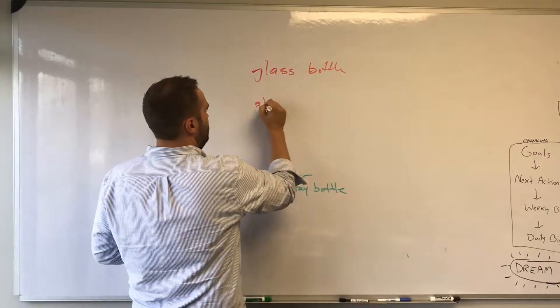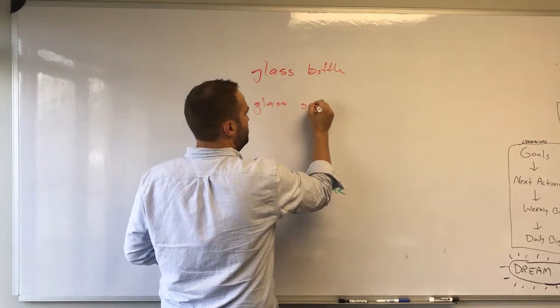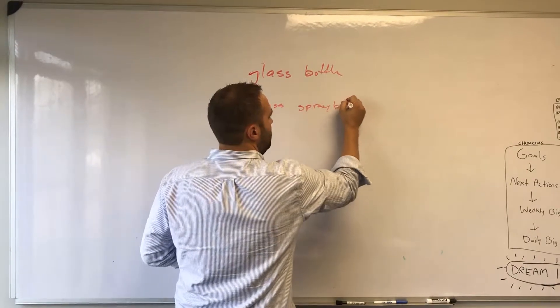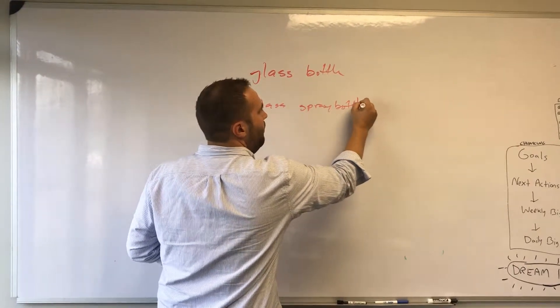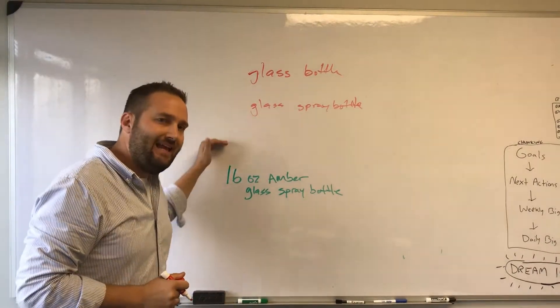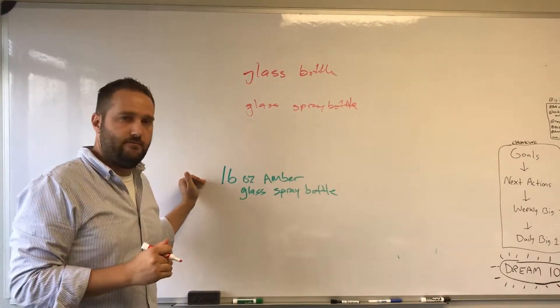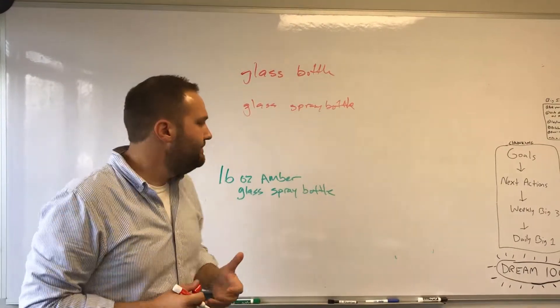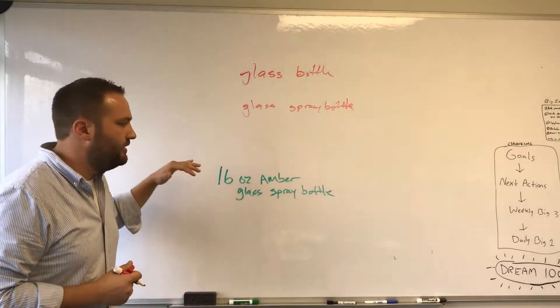If you have one Google Shopping campaign, you are bidding the same on all these terms, which is going to give you low performance. It means you're going to be under-bidding on your great terms and over-bidding on the low value terms.